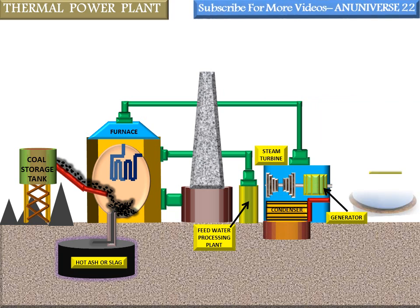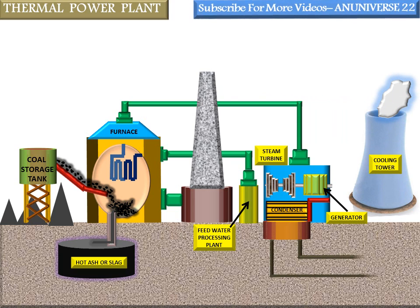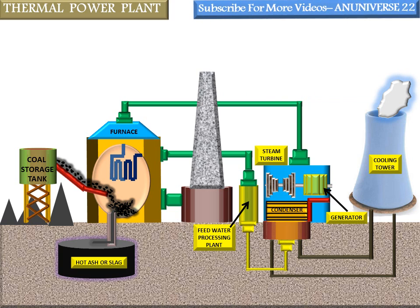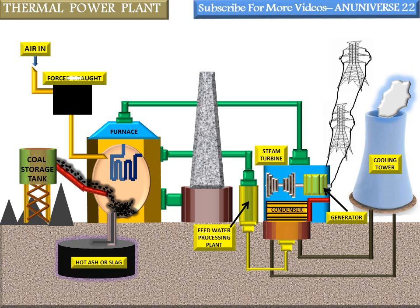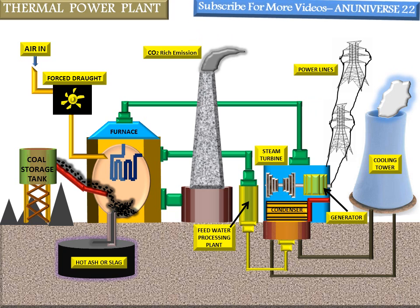This is the generator, condenser, and cooling tower. These pipes show the supply of water from the condenser to the cooling tower, and also the supply of water from the condenser to the feed water processing plant. These are the power lines. This arrangement supplies air to the furnace or boiler with the help of a fan. And this is the CO2-rich emission discharged through the chimney.